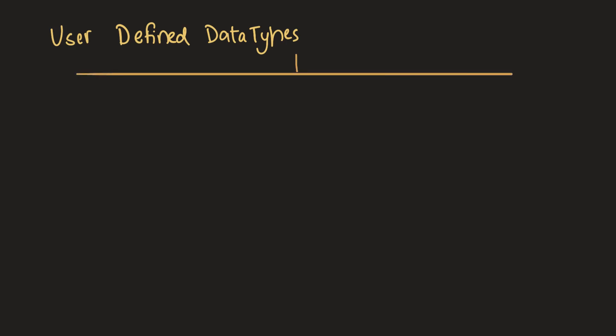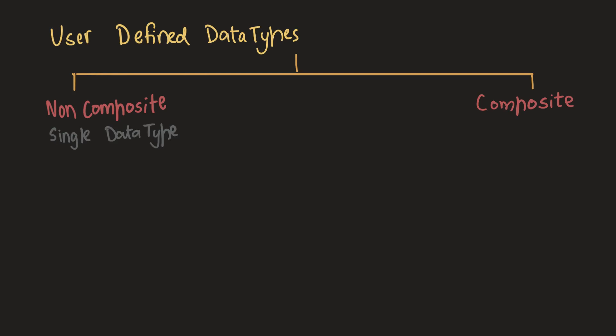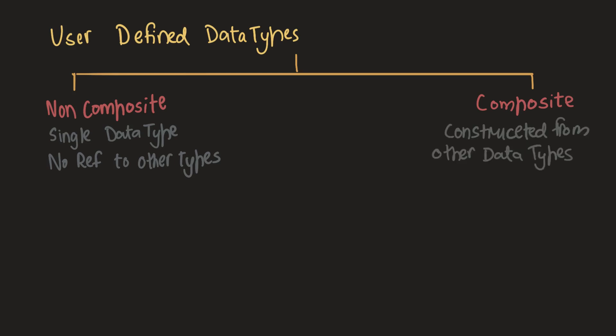There are two kinds of user-defined data types: non-composite user-defined data types and composite user-defined data types. Non-composite user-defined data types have a single data type that do not involve a reference to any other type and are usually already built into the programming language. Composite data types are those which are constructed from other data types. Now let's look at each in some more detail.